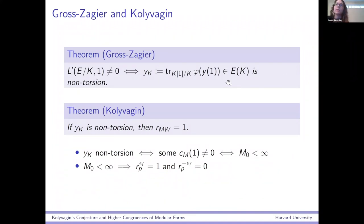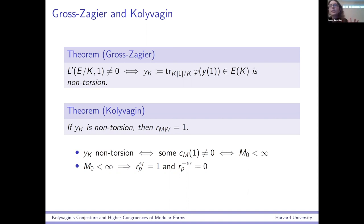The most famous consequence of Kolyvagin's conjecture is the theorem of Gross-Zagier: the analytic rank of E is exactly one if and only if the Heegner point Y_K is non-torsion. It's often called the theorem of Gross-Zagier and Kolyvagin because Kolyvagin's work implies that if Y_K is non-torsion, then the Mordell-Weil rank is exactly one. If Y_K is non-torsion, that means that some CM(1) is non-zero — and if that's the case, that's equivalent to M_0 being finite.